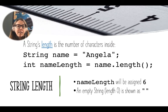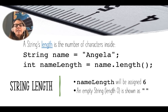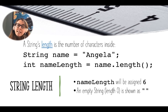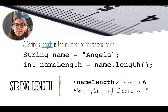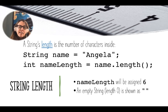A string's length is just the number of characters inside. If we have String name = "Angela", then name.length() returns an integer — in this case 6. So if we set int nameLength = name.length(), nameLength will be assigned 6. It's also worth noting that an empty string — just two double quotes with nothing inside — has a length of zero.